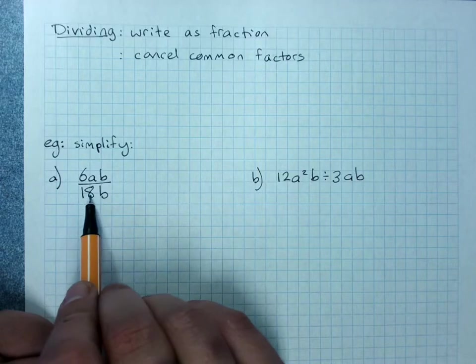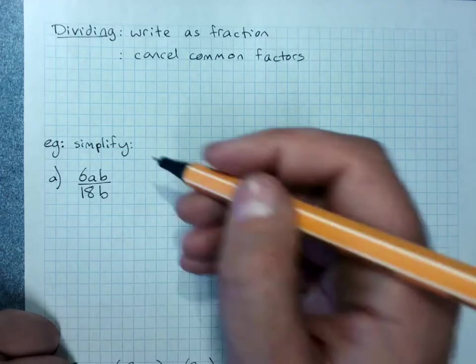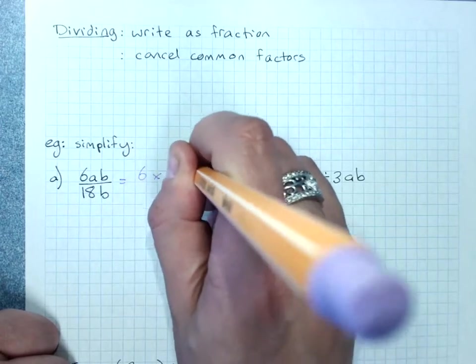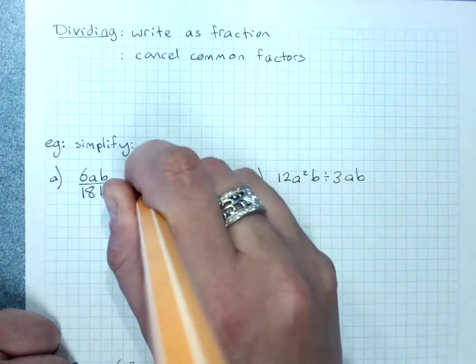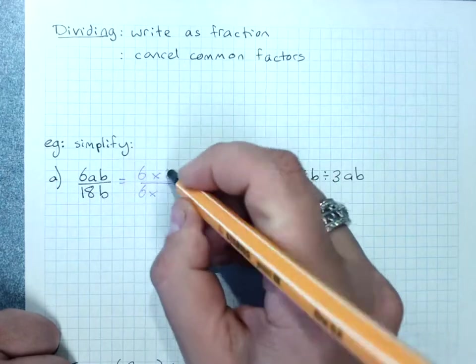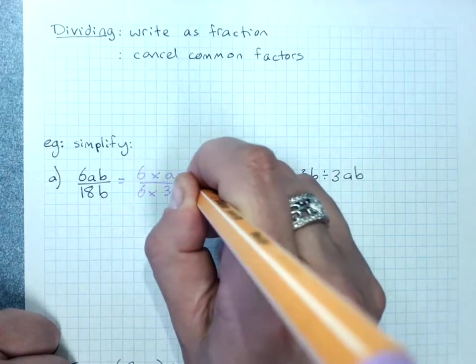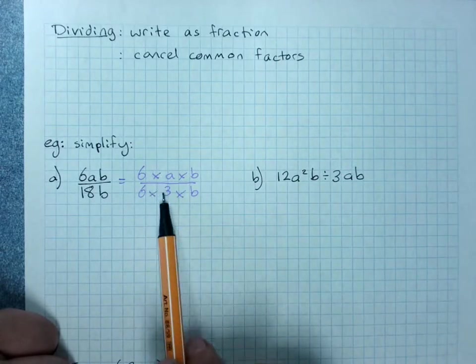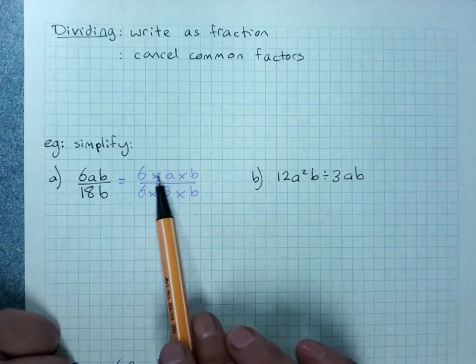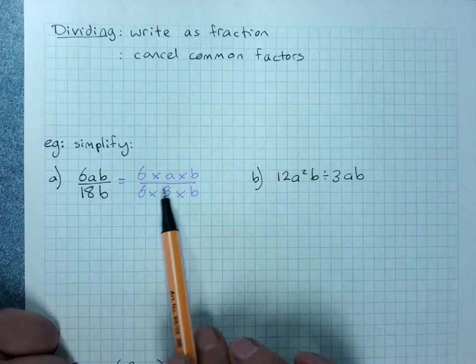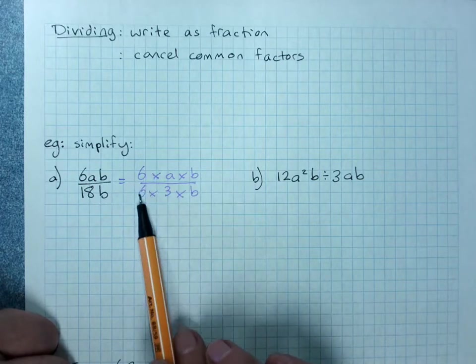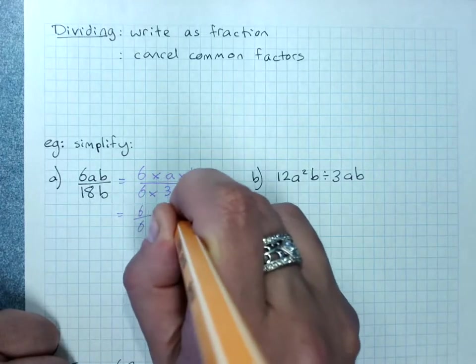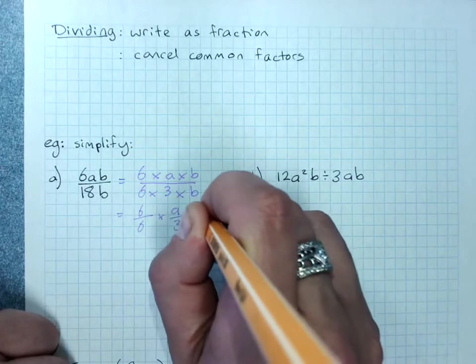So I could write this as 6 times a times b over 6 times 3 times b. And when you've got multiplications as the only things gluing your term together, that's actually the same as writing this as 6 over 6 times a over 3 times b over b.